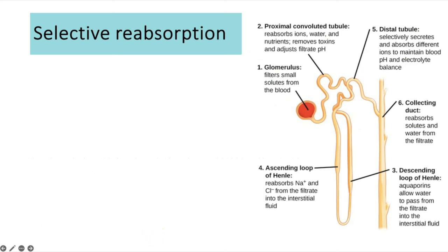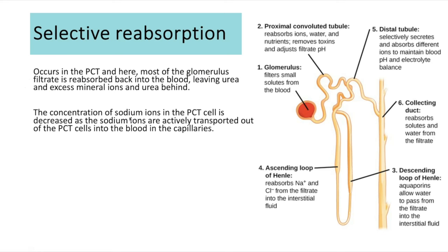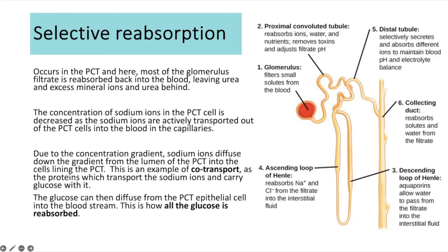At the proximal convoluted tubule, most of the filtrate is reabsorbed back into the blood, leaving behind urea, excess mineral ions and some excess water. The main process here is glucose being actively transported via co-transport — much like in digestion. Sodium ions are actively transported out of the epithelial cells of the proximal convoluted tubule into the blood, lowering the sodium ion concentration in those cells compared to the lumen.